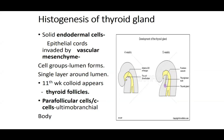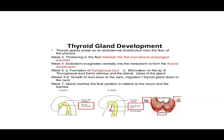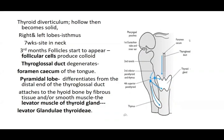Both the tongue and the thyroid gland develop from the floor of the pharynx. The thyroid forms a diverticulum downward; the tongue forms from lingual swellings from the first, second, third, and fourth arches. The parathyroid glands — inferior from the third arch and superior from the fourth — also descend, the inferior one descending further and therefore having more chances of ectopic positions.